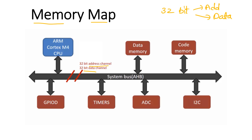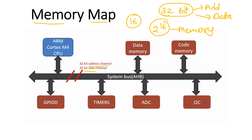Based on the size of the address bus, your memory map is ranged. If your address bus is only 16-bit, then you can access up to 2 power 16 memory locations. Here, our address bus is 32-bit, which means you can allocate addresses up to 2 power 32.